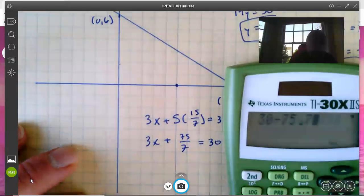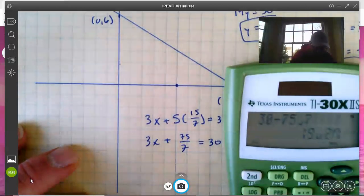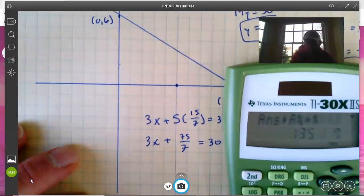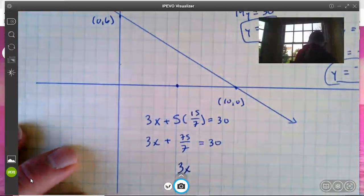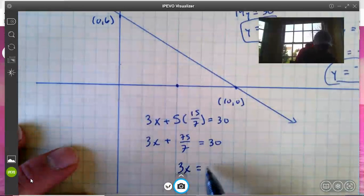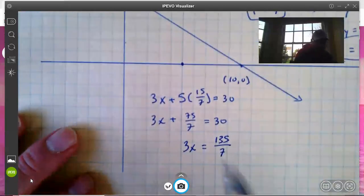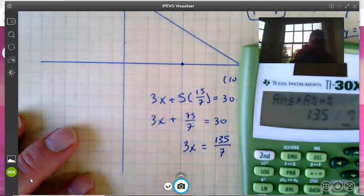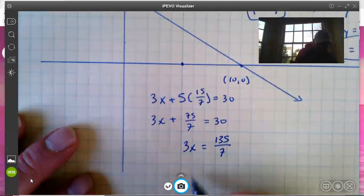That's 19 and 2/7, which is 135/7. So I'm going to subtract 75/7 from each side and we end up with 3x = 135/7. And then we'll divide by 3 on both sides, and we get x = 45/7.